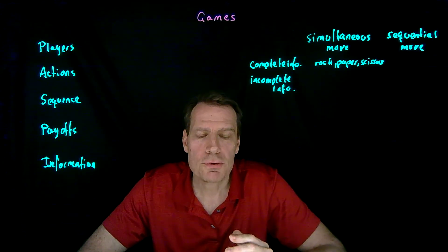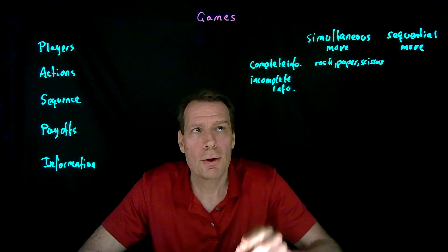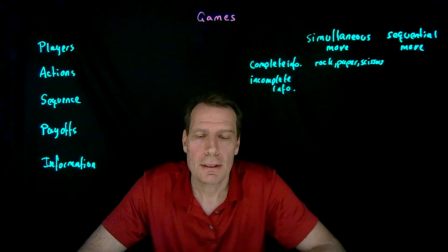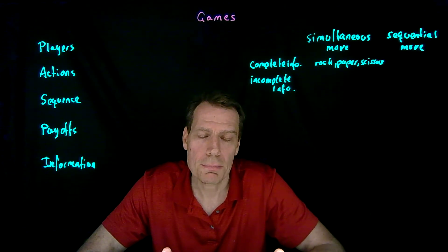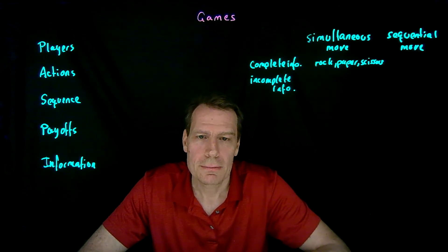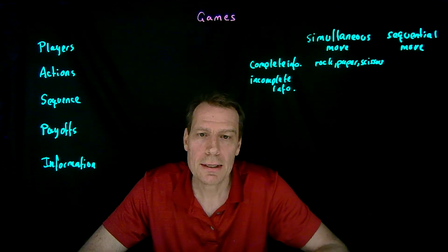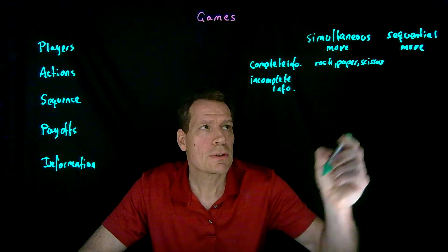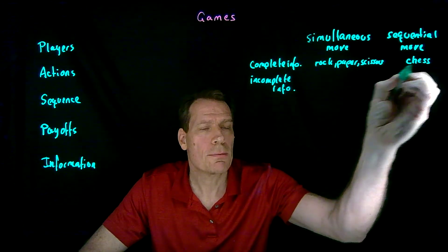Compare that to the game of chess. In the game of chess, everybody understands who wins the game and who loses the game depending on how the game was played. So we have complete information about what the payoffs mean to other players. But we're moving sequentially — White gets to move first, Black moves next, and then they alternate. So chess is a sequential move game that is also a complete information game.